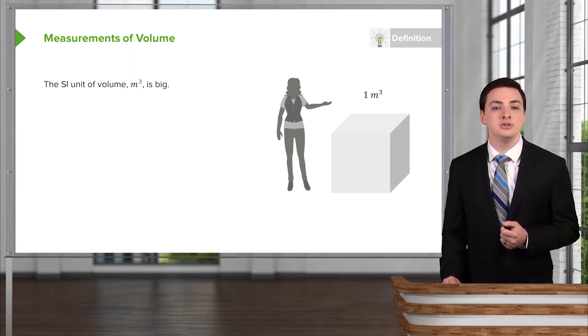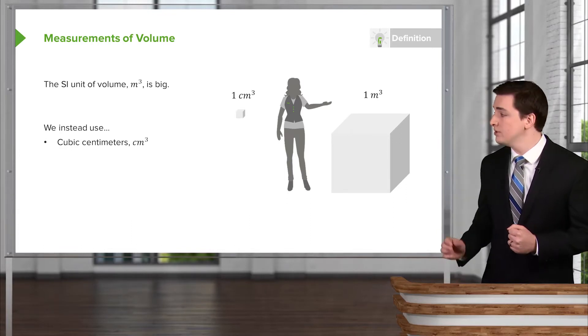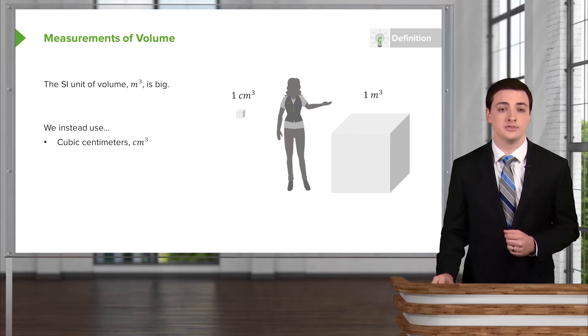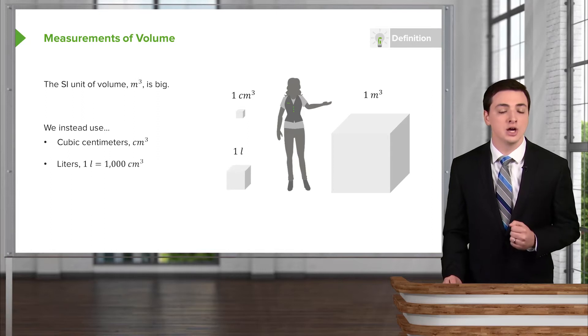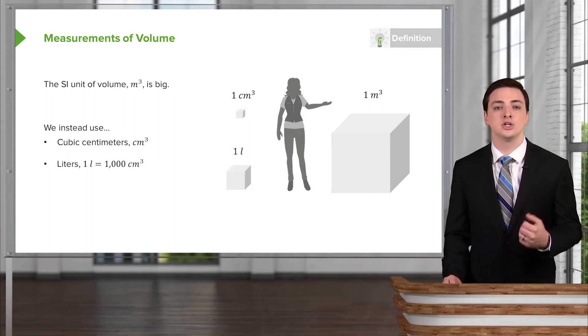So we very typically will be using smaller units for our volumes. For example, we might be using a cubic centimeter, where a centimeter of course is one one-hundredth of a meter. So a cubic centimeter is much smaller. Or for a slightly larger unit, we could use a thousand cubic centimeters, and that is called one liter.